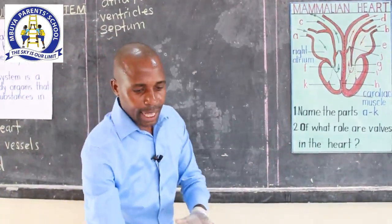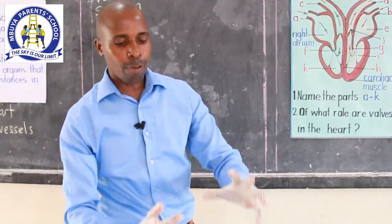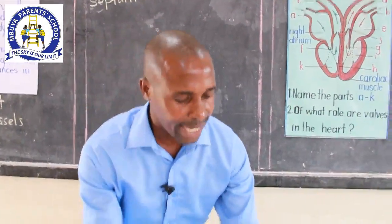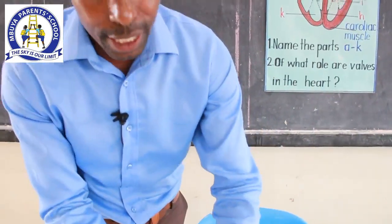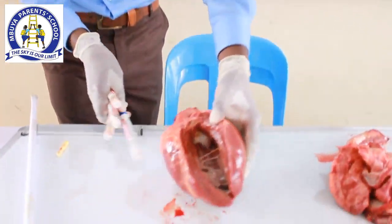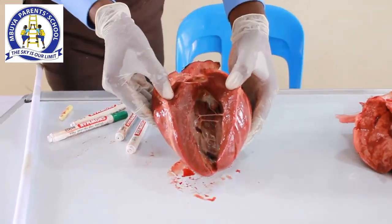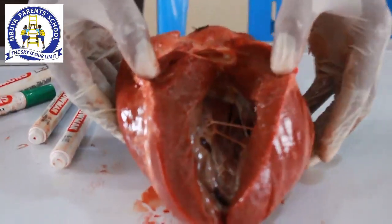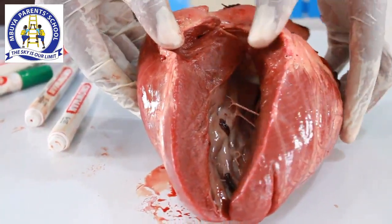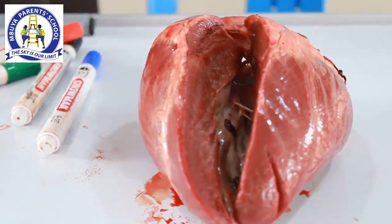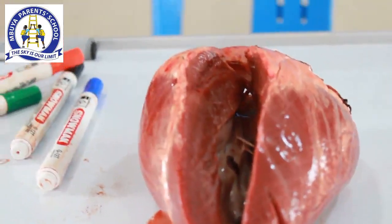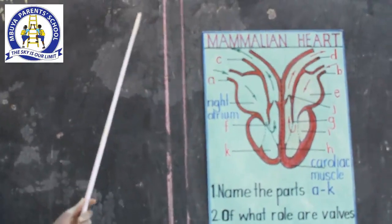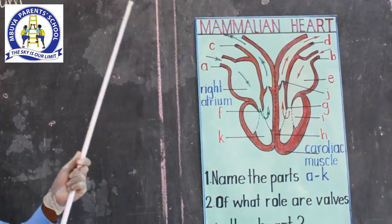We are saying this is the real heart of a mammal. When this heart is cut across — the cross section — and we look inside, it has different parts. These different parts inside have been identified and we made an illustration on a chart where we are going to see them one by one and name them. We are going to move now to our chart. The chart shows a mammalian heart and it is labeled — we are going to move part by part.